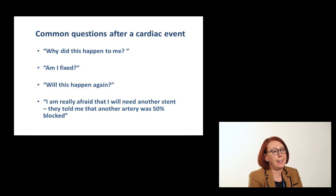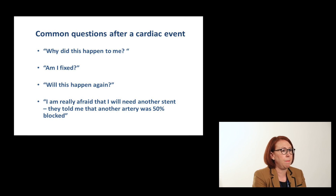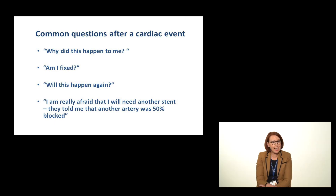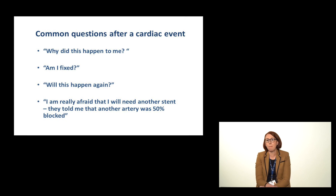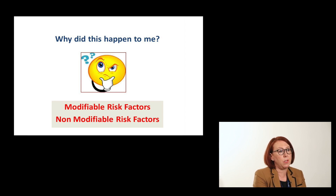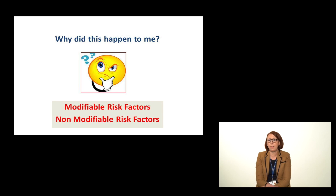I see patients in clinic all the time after a heart attack or after they've had a stent and the questions are very similar: Why did this happen to me? Am I fixed? Will it happen again? And a big fear is — I was told one of my arteries was 50% blocked, does it need a stent? Am I going to need a stent in future? I think it's really important to look into the patient's history to see why it did happen, because if you can explain it to the patient and why they developed this, then they know they can control it and prevent it coming back.